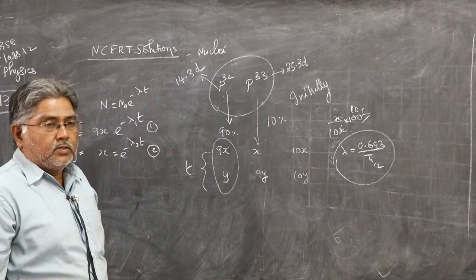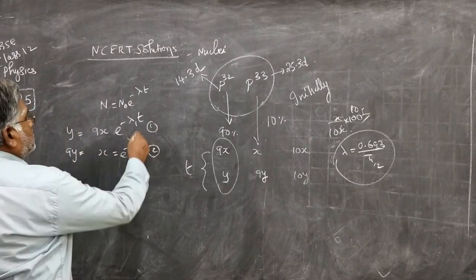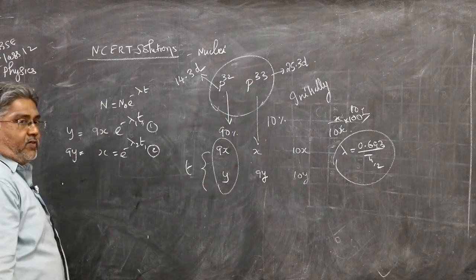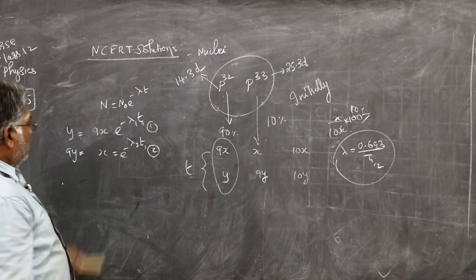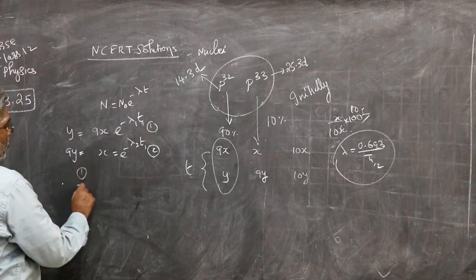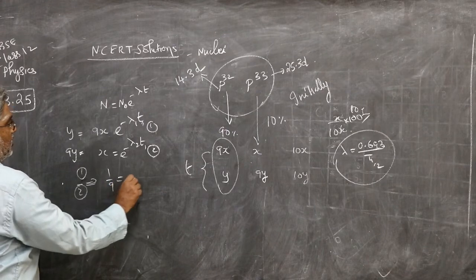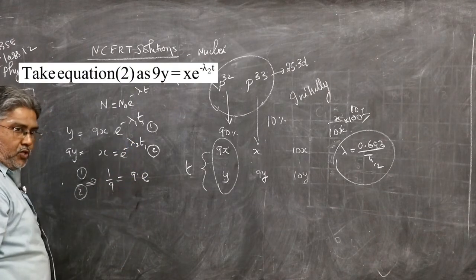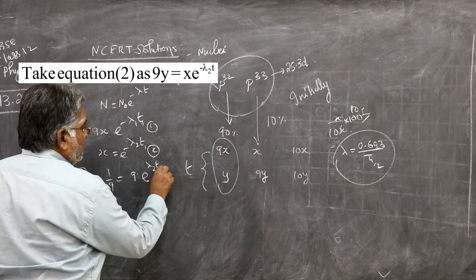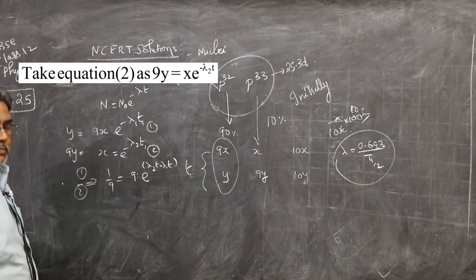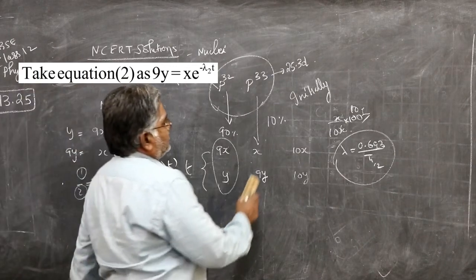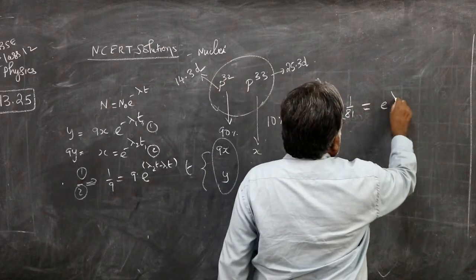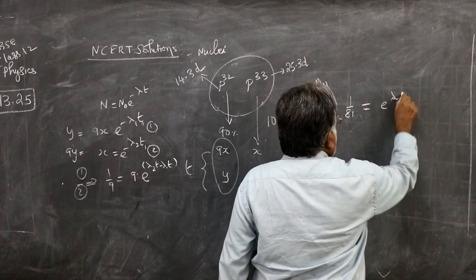Here λ₁ is the decay constant for Phosphorus-32 and λ₂ is the decay constant for Phosphorus-33. The formula relating decay constant and half-life is λ = 0.693 / t½. Dividing equation 1 by equation 2: 1/81 = e^(λ₂t − λ₁t). Taking the inverse: 81 = e^(λ₁t − λ₂t). Taking natural logarithm: ln(81) = λ₁t − λ₂t = t(λ₁ − λ₂). Therefore t = ln(81) / (λ₁ − λ₂), written as: t = ln(81) / (0.693/14.3 − 0.693/25.3).